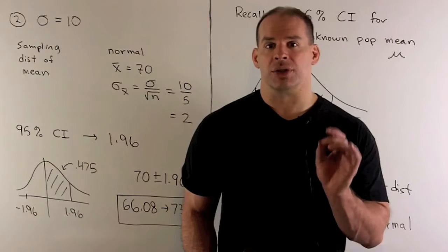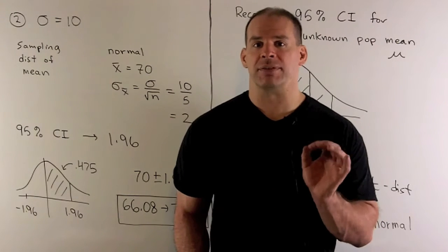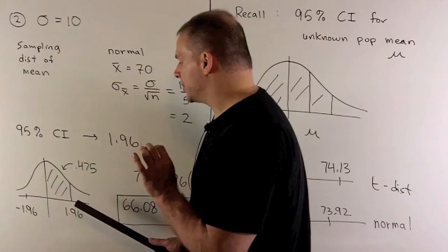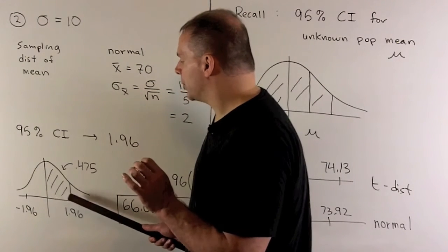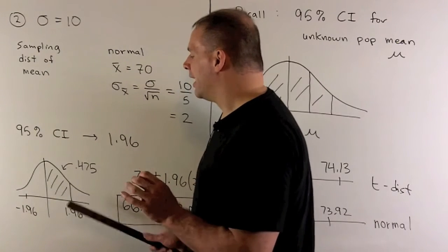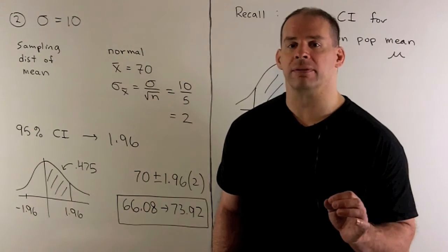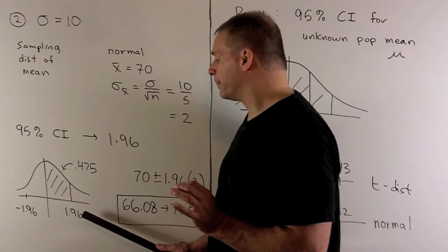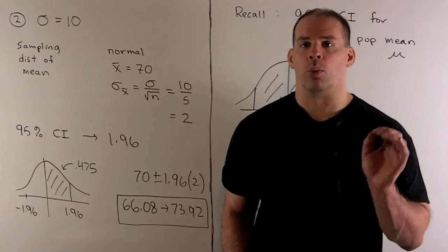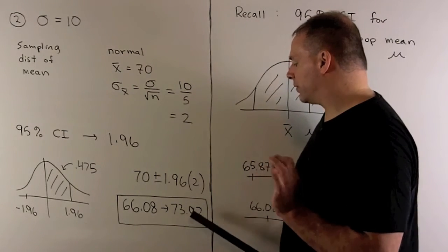What will change is the factor for 95%, because now we're using a normal distribution instead of a t-distribution. For the normal distribution table, the z-value is looked up based on the area from 0 to z. For a 95% confidence interval with both tails, half the area is 47.5%, or 0.475. Looking that up in the table gives us 1.96. So our confidence interval endpoints are 70 plus or minus 1.96 times 2, giving a confidence interval from 66.08 to 73.92.